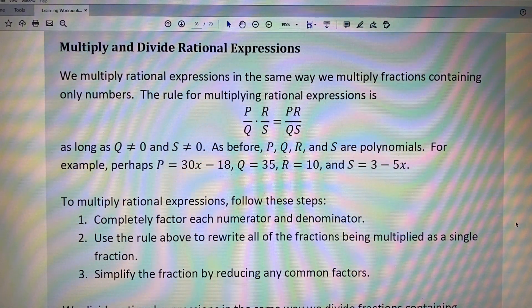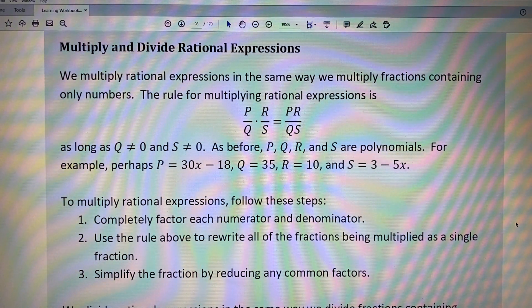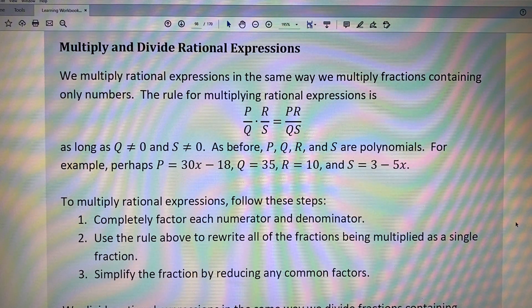For example, perhaps P is 30X minus 18, maybe Q is 35, R is 10, and S is 3 minus 5X.